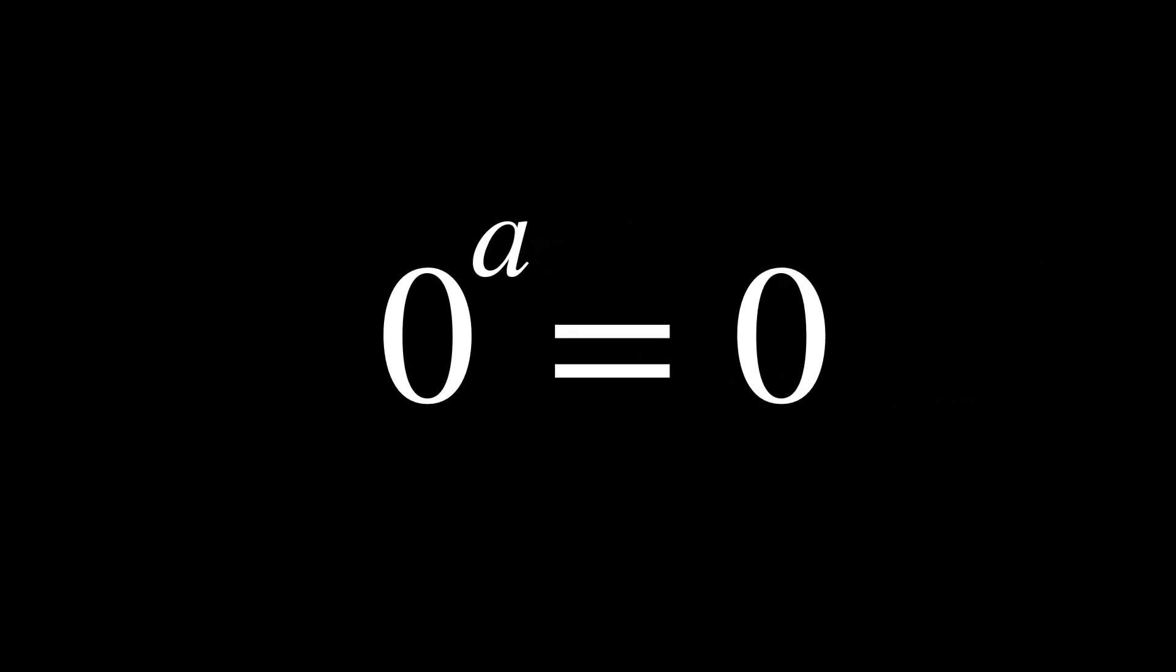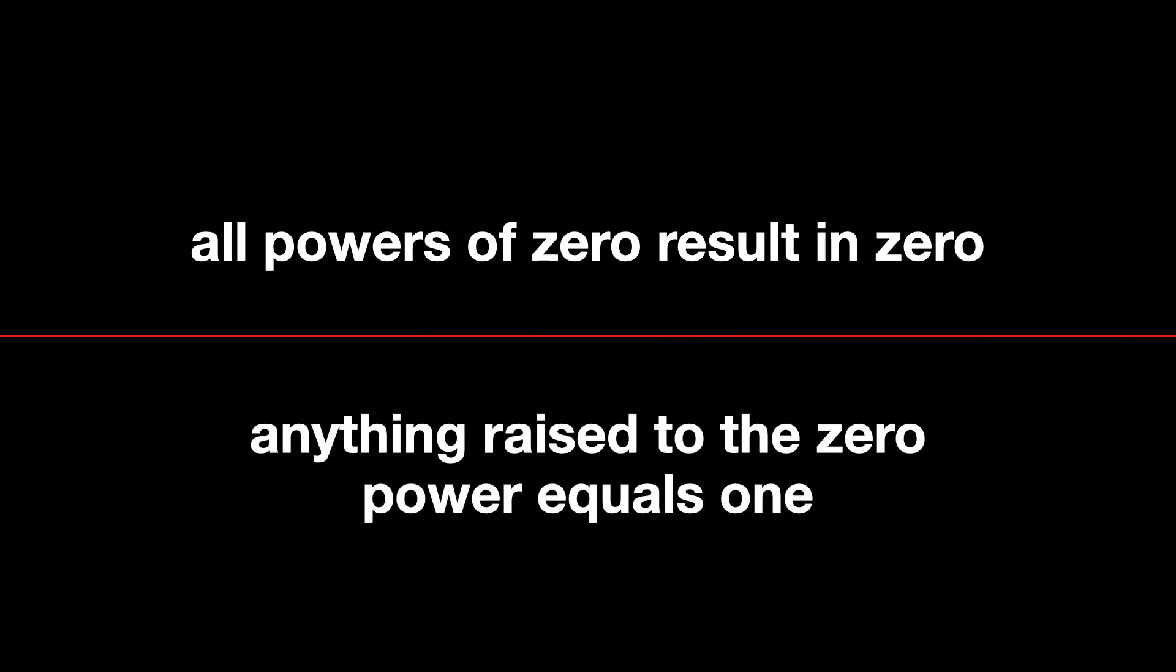It's a particularly interesting one because it doesn't neatly fit into any straightforward rule. Since any number a to the power of 0 is equal to 1, this should therefore mean that 0 to the power of 0 is 1. But also, if we say that 0 to the power of a will always be 0, it would mean that 0 to the power of 0 equals to 1 is the same as 0 to the power of 0 is equal to 0, which of course isn't true. But when both the base and the exponent are 0, the results conflict. The question becomes whether the all powers of 0 result in 0 rule overrides the anything raised to the 0 power equals 1 rule, or vice versa. We need more in order to determine the value.